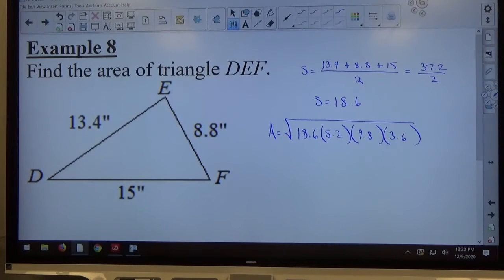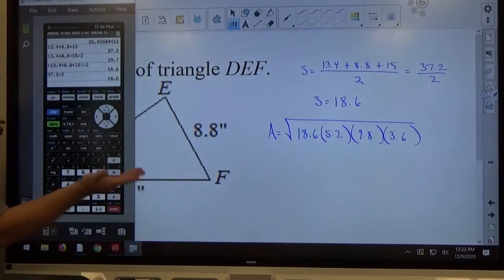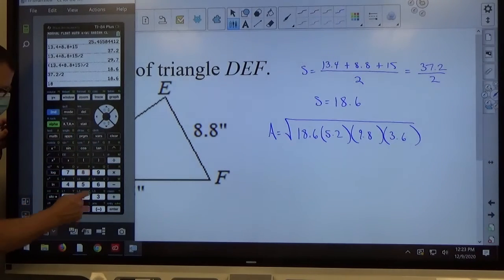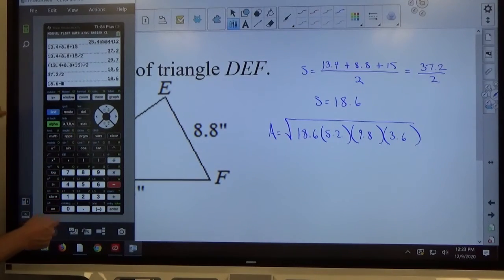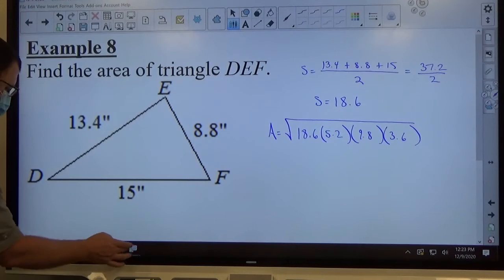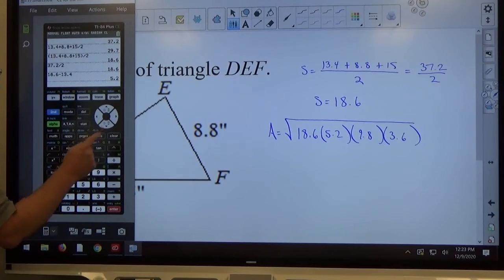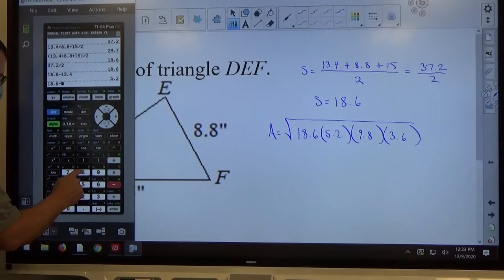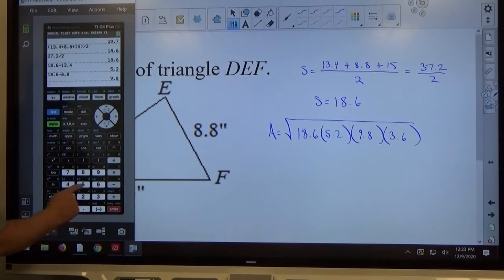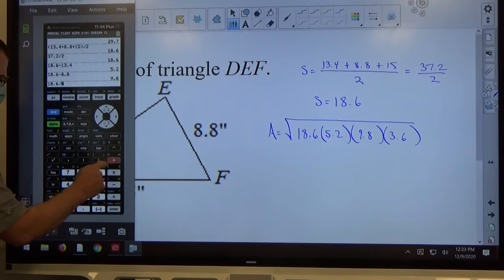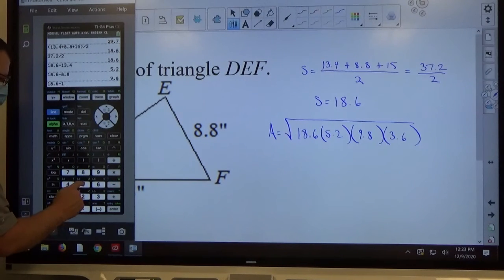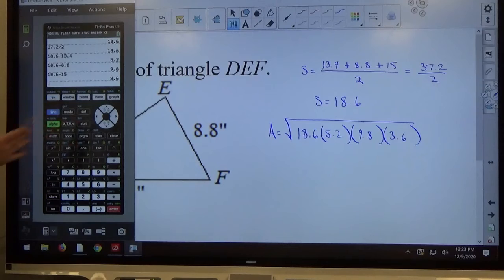I don't even write on my paper minus whatever, I just evaluate it. So again, if I was using a calculator: 18.6 minus 13.4, 18.6 minus 8.8, 18.6 minus 15. So again, you can get those numbers with a calculator if necessary, but you want to get those numbers.